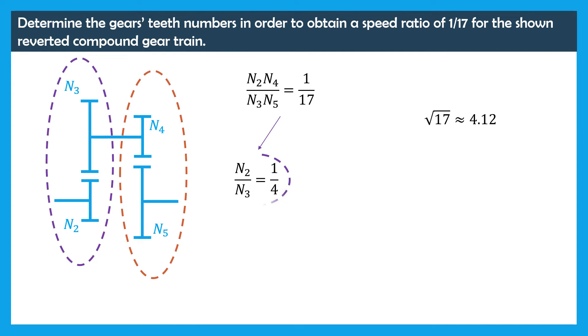Thus we choose to have 1 over 4 as speed ratio of the first stage. This will be our first choice. And thus, the speed ratio of the second stage should be 4 over 17. Please be advised that this is just one way to satisfy the final speed ratio. There are multiple other ways to achieve it.